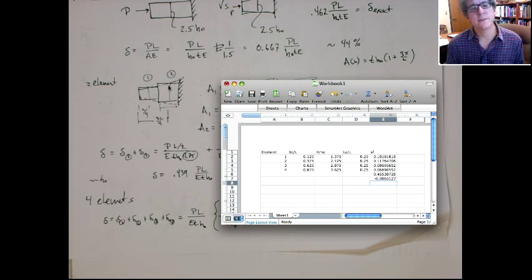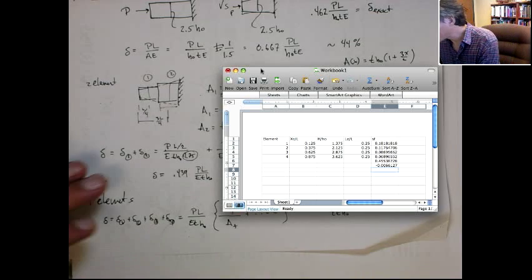Actually, it turns out, I forget exactly where it is, but for a tapered bar, you actually want to use the cross-sectional area at, like, the one-third point or something like that. It gives you almost the exact results.